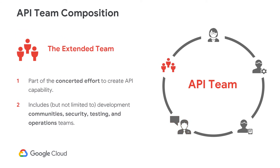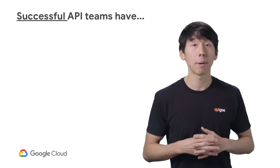The extended team is also very important in getting your APIs out to production. The extended team covers organizations such as security, QA, operations, and others. The extended team and their processes may vary depending on how your organization is set up, but the key takeaway is that these teams should support rather than obstruct your time to market.